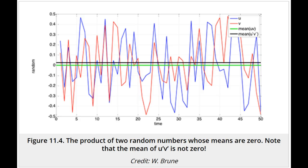You can make a simple model with a random number generator to demonstrate the average of the product of two perturbation terms is not necessarily zero. This calculation was chosen so that the averages for u and v were zero, and so the average of the product of average u and average v is zero. But the average of the perturbations is not zero.